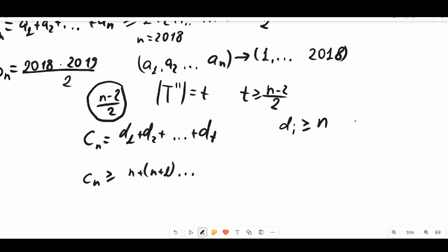cn must be greater or equal to n plus (n+1) all the way up to (n+t). This equals (n+2) times (n+t) times (t+1) over 2. And now we can insert instead of t, (n-2) over 2, and we get 2 times (n + (n-2)/2) times ((n-2)/2 + 1) over 2.